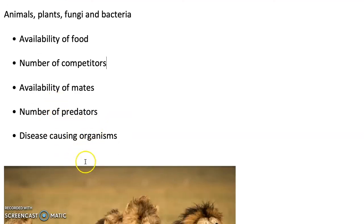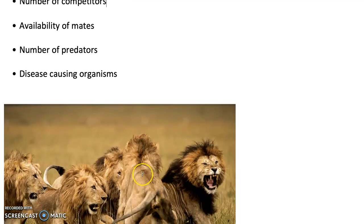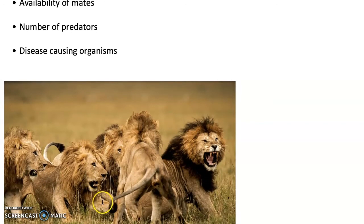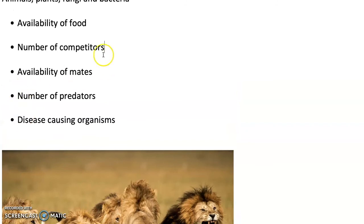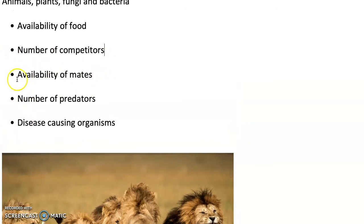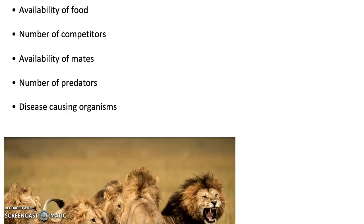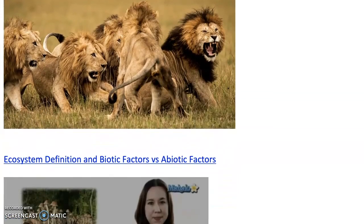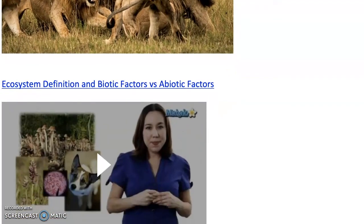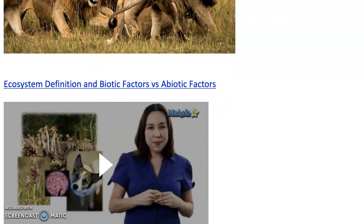You've got animals that will fight, such as lions. There'll be prides of lions, so availability of mates is very important to organisms. The number of predators in an area and also disease-causing organisms—not only humans are affected by disease. You can have bacteria that affect other animals.